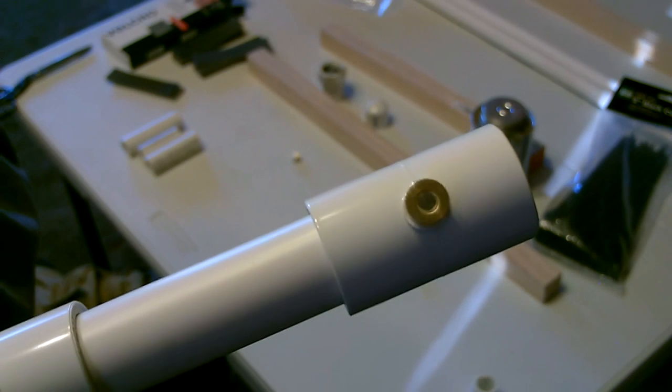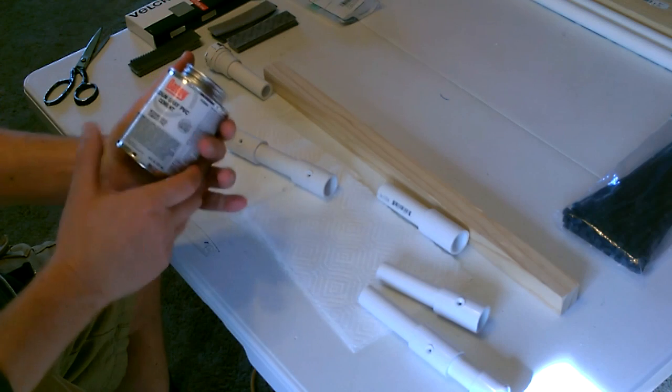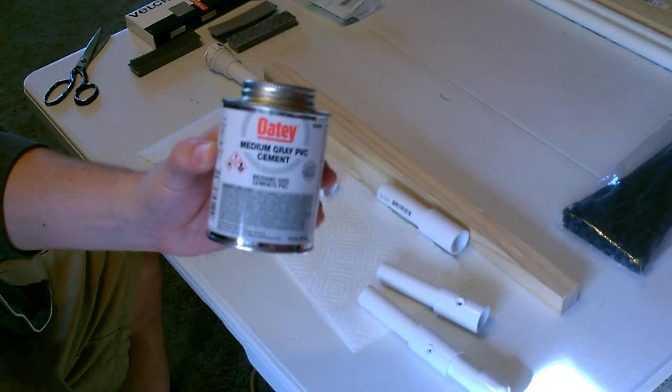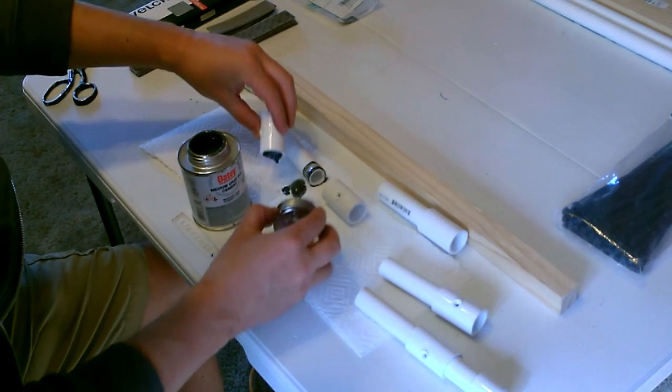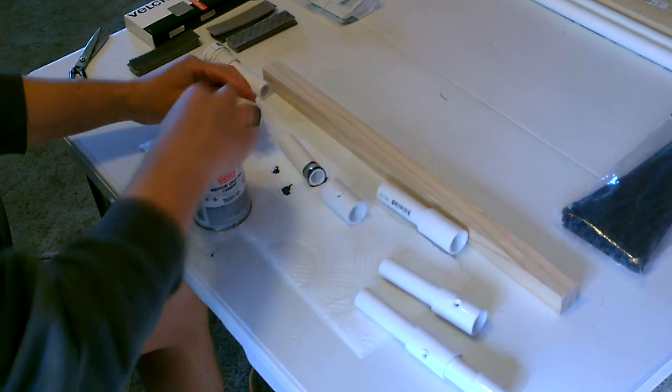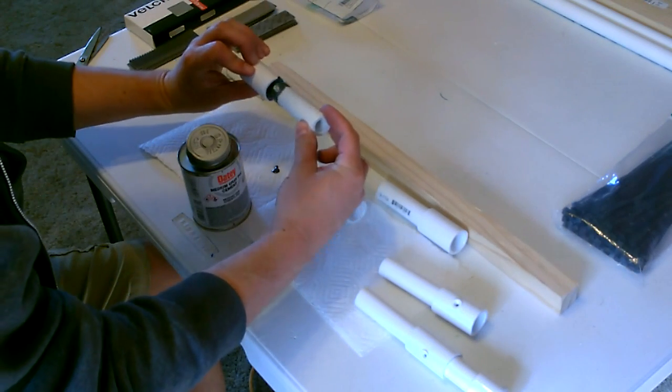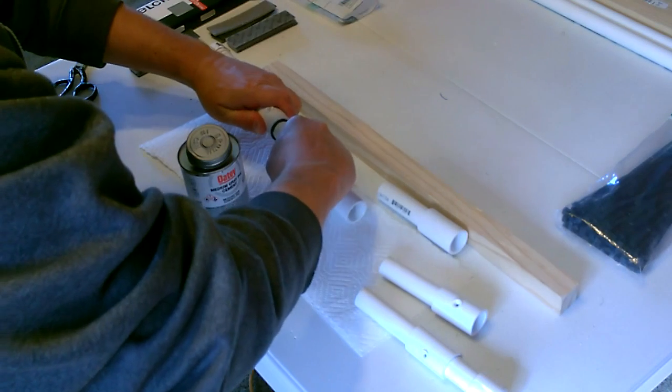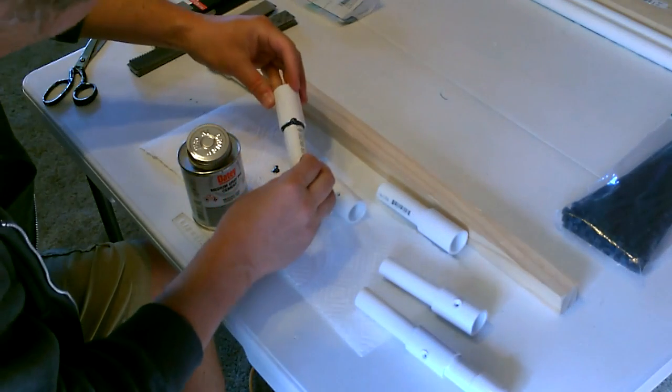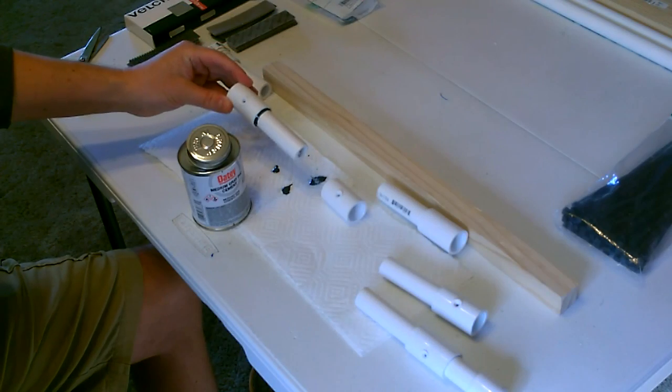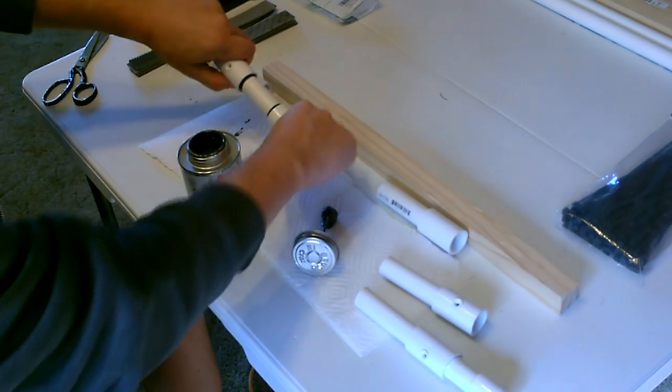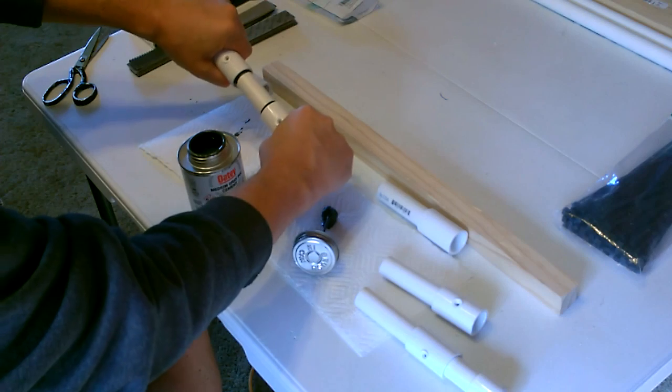All right now let's go ahead and pipe cement the whole thing together. I'm going to go with the medium gray PVC cement on this one. Just like that. Of course make sure the holes are lined up straight. You can't move it after it dries.